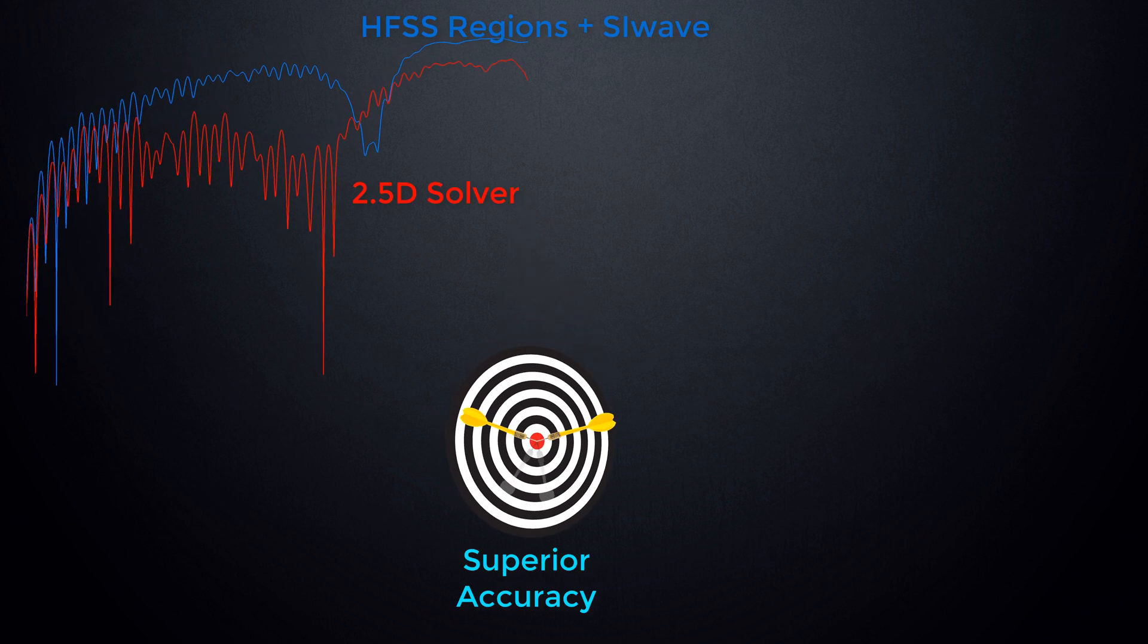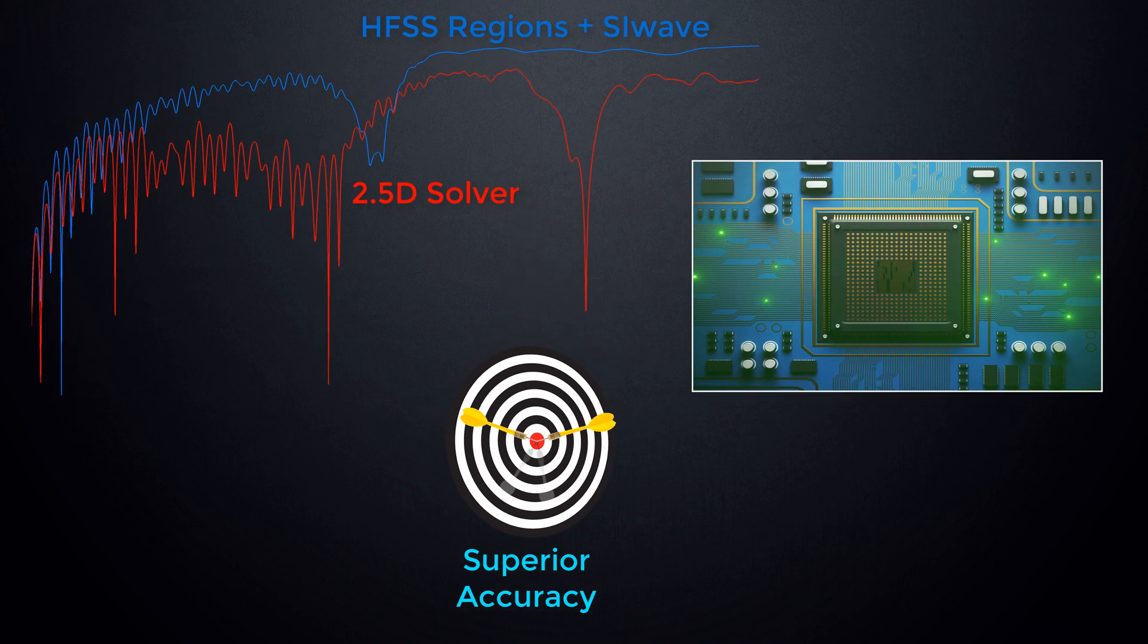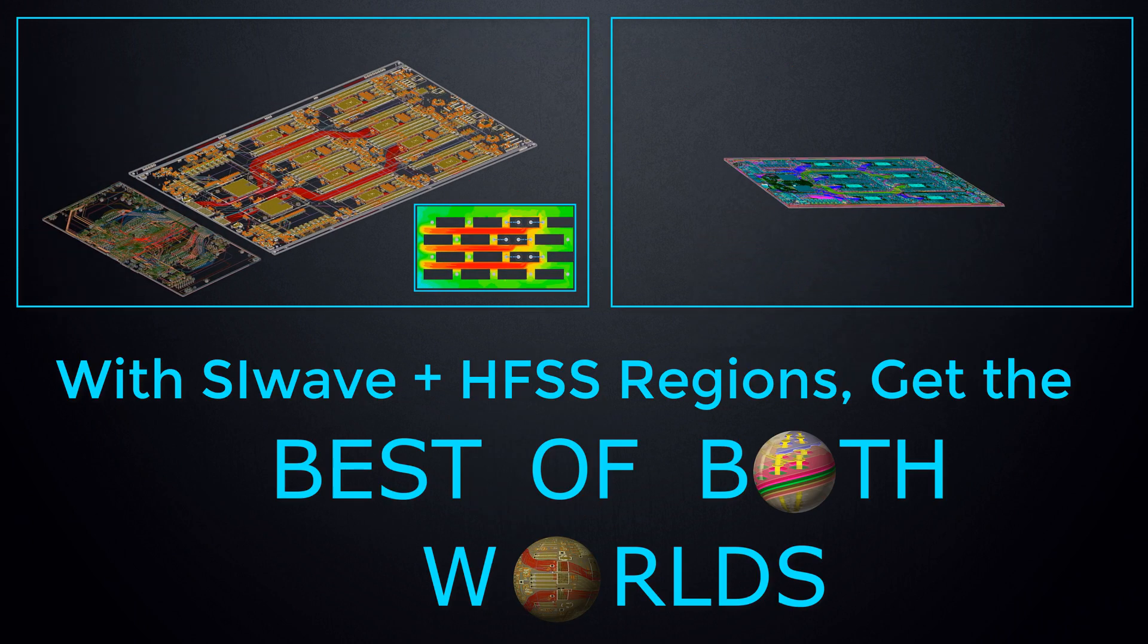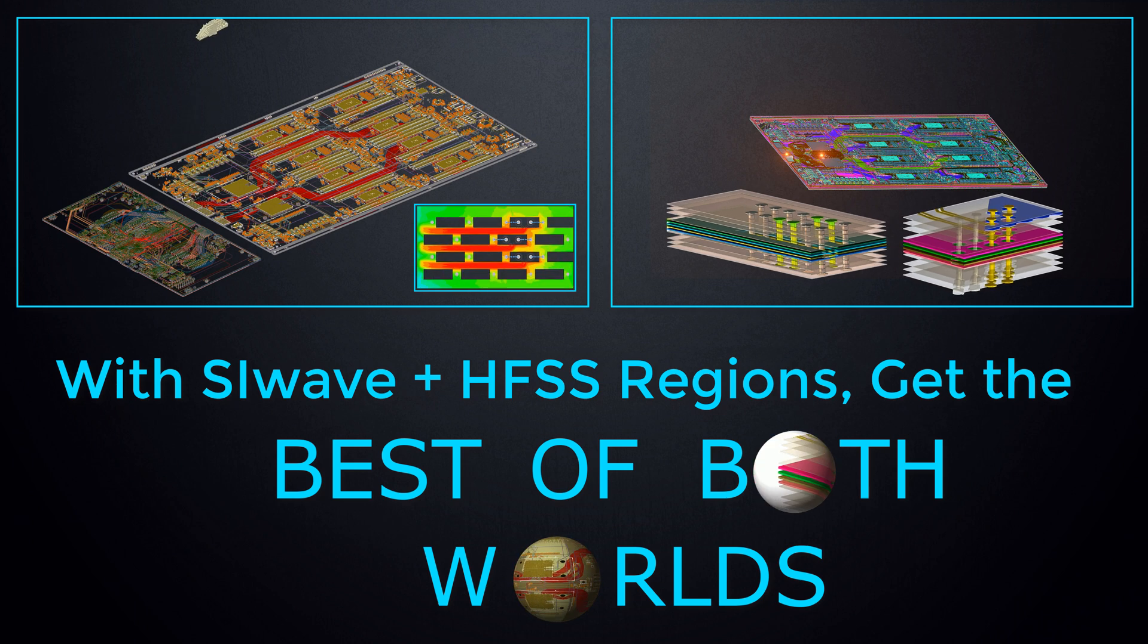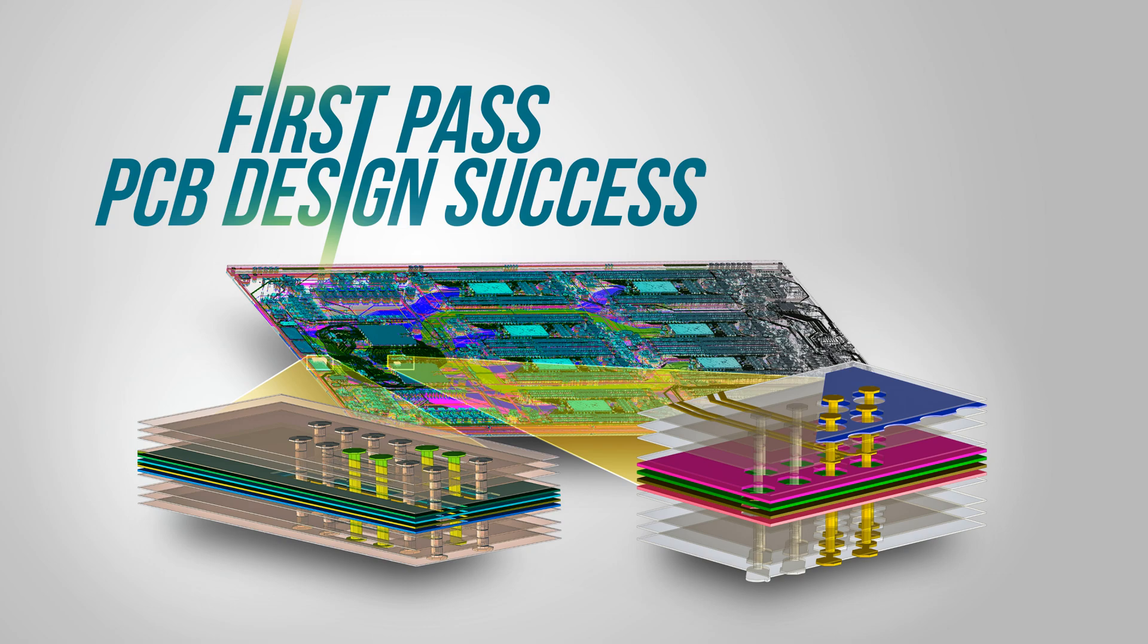With more accurate electromagnetic extraction methods, designers can precisely judge the signal integrity of high-speed electronic systems. HFSS Regions and SI-Wave properly identifies impedance discontinuities and provides superior accuracy for predicting channel response while keeping simulation time to a minimum.